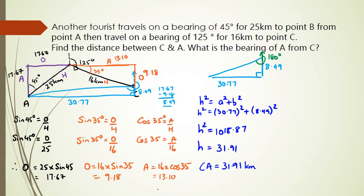So to work out the angle, I'm going to use tan because I have opposite and adjacent. So this is going to be my opposite and this is going to be my adjacent. So I have tan theta equals opposite over adjacent, tan theta equals 30.77 divided by 8.49. So theta equals inverse tan of 30.77 over 8.49.